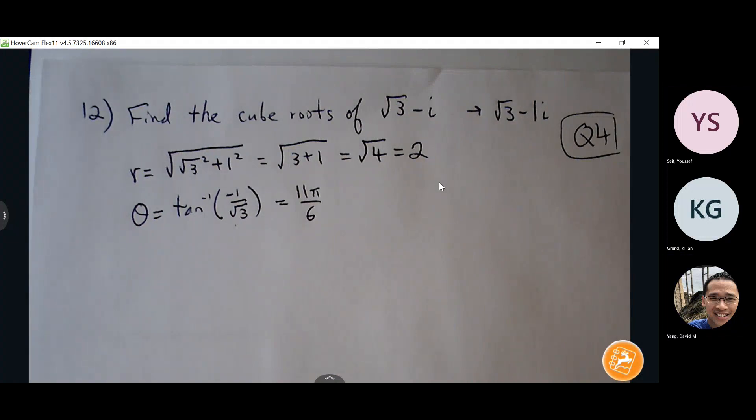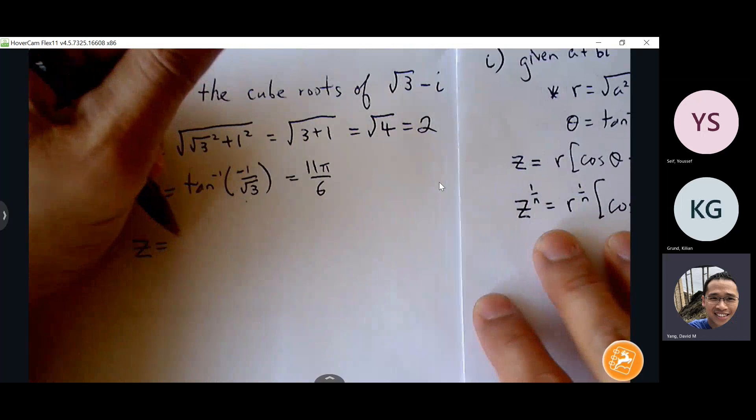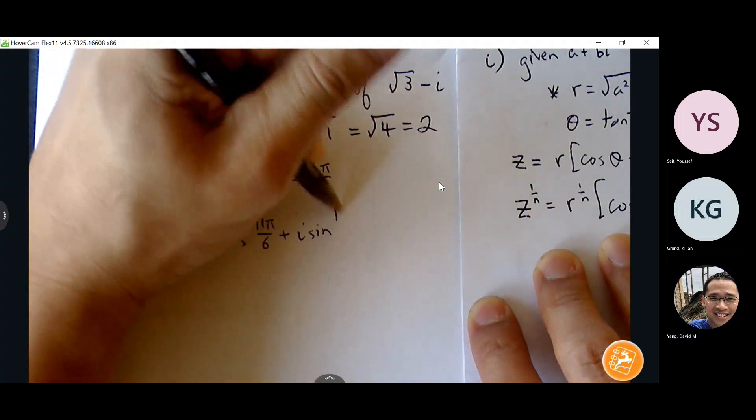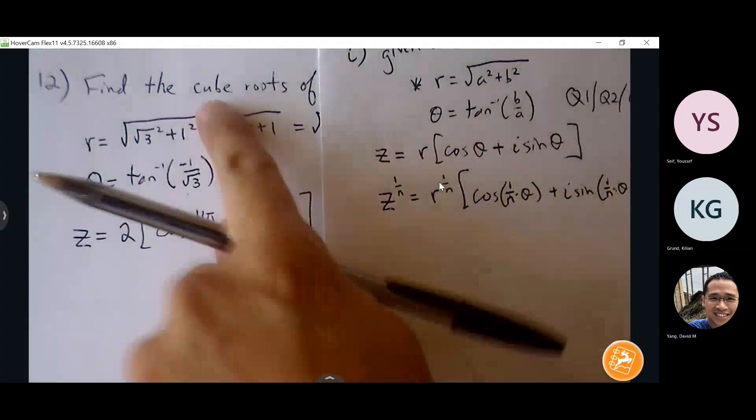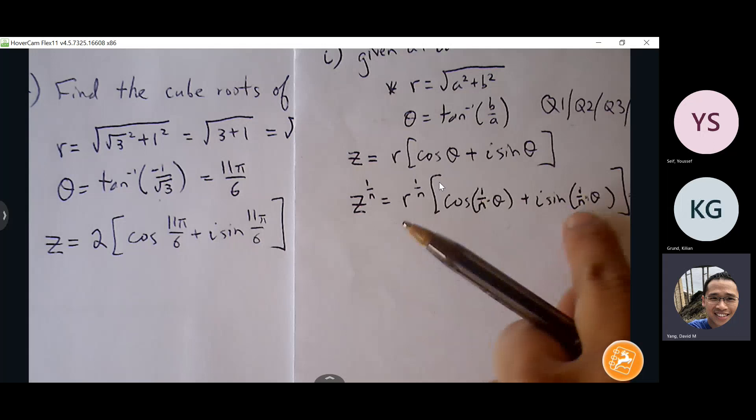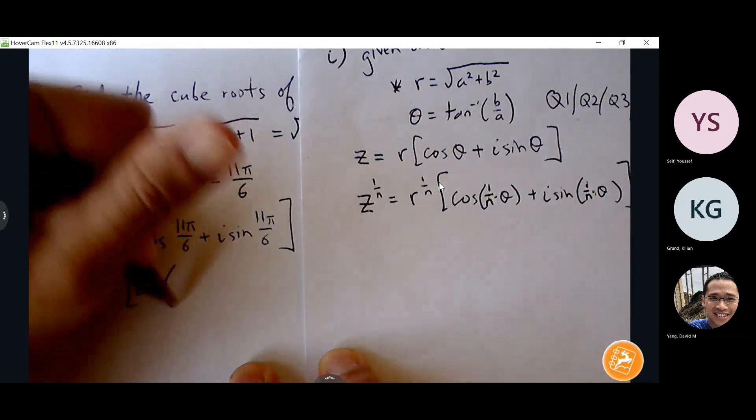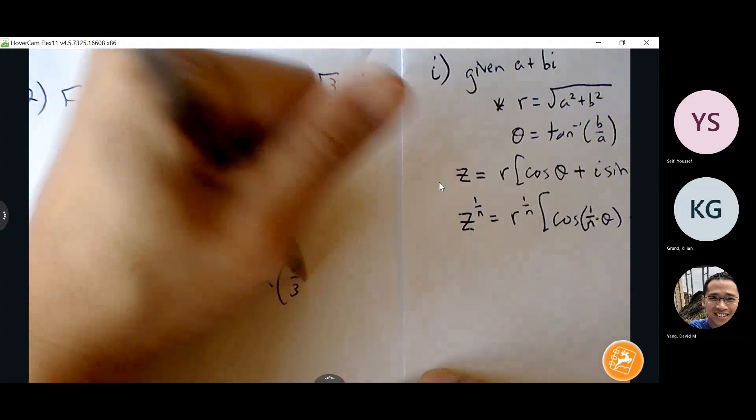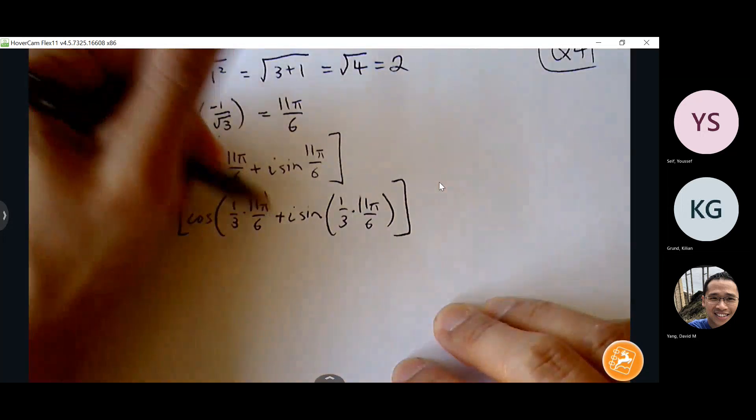Alright, so I have my r and theta. Now I can work towards building my complex number, right? Cosine of theta plus i sine of theta, right, now I'm going to find the cube root, so my n is 3, so I'm going to raise my r to the 1 over 3 and then multiply my theta by one third.